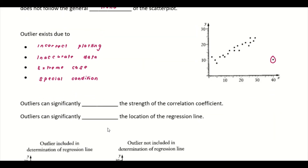What is the problem with outliers? The correlation coefficient R tells us how close your data points are and whether there is a strong, moderate, or weak relationship. Now imagine if this outlier doesn't exist — all these points can give us a high R because their relationship is pretty strong and they are close together. But if there's an outlier that is super far away from the other data points, my correlation coefficient will be decreased because of the existence of this outlier. Outliers can significantly reduce the strength of the correlation coefficient.